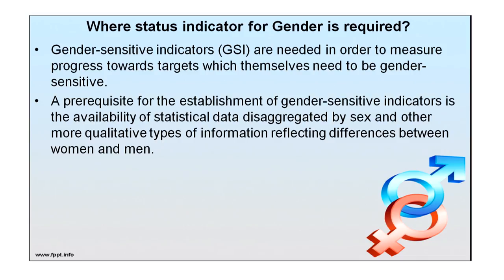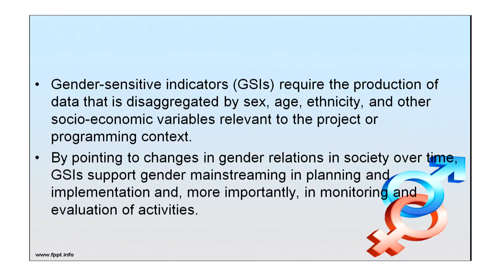Gender sensitive indicators are needed to measure progress towards targets that themselves need to be gender sensitive. A prerequisite for establishing gender sensitive indicators is the availability of statistical data disaggregated by sex and qualitative information reflecting differences between women and men. GSI requires the production of data disaggregated by sex, age, ethnicity and other socio-economic variables relevant to the project or programming context. GSIs support gender mainstreaming in planning, implementation, and monitoring and evaluation of activities.